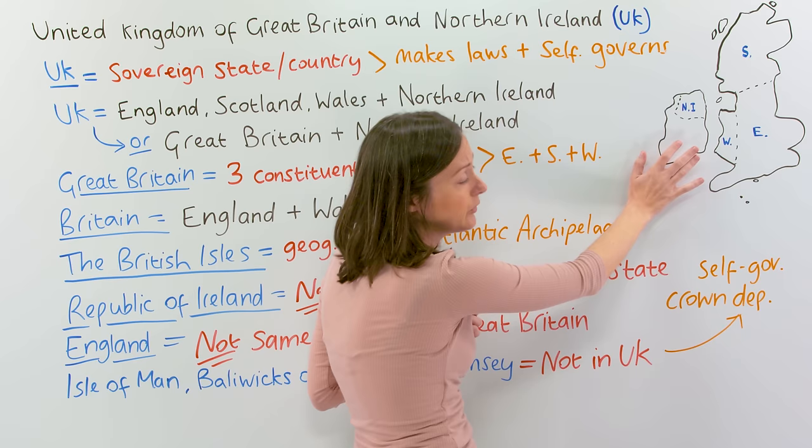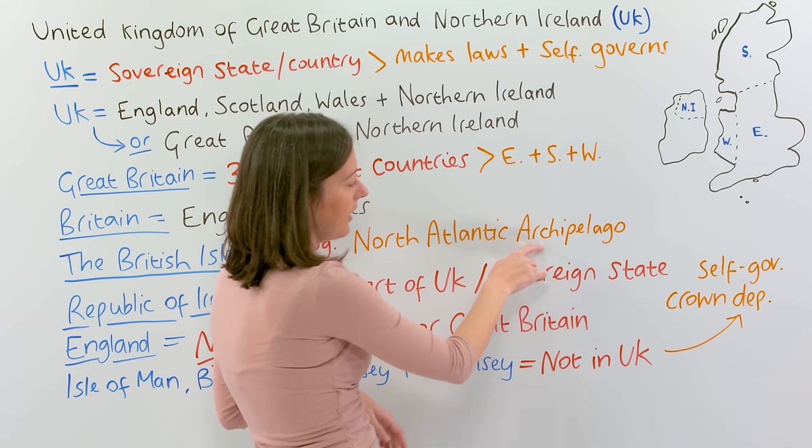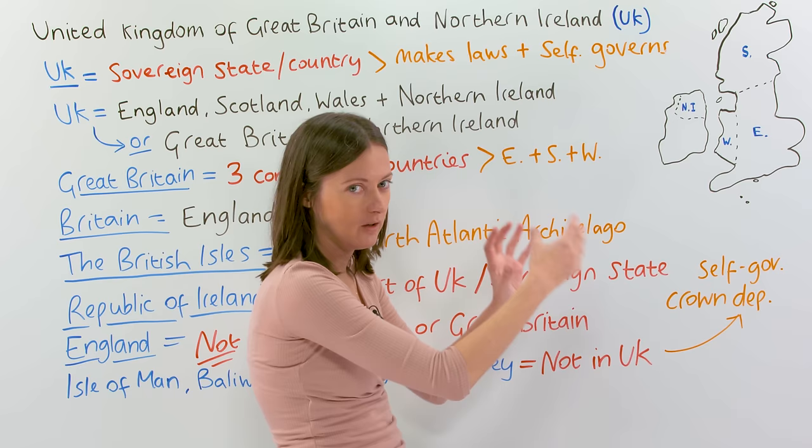If you do object to calling it the British Isles, you can say the North Atlantic Archipelago — archipelago means a collection of islands, and the place in the world is in the North Atlantic.